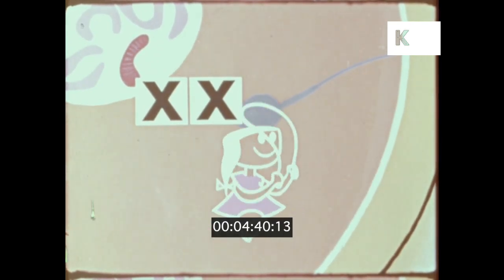In the mother's egg cell, however, the sex chromosome is always X type. So if the sperm which enters the egg carries an X chromosome, there will be two X chromosomes. And this always means a girl.